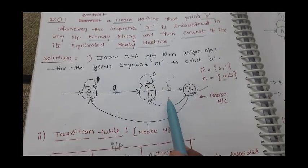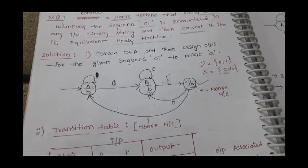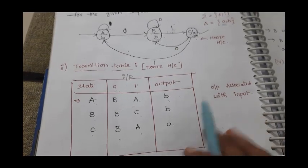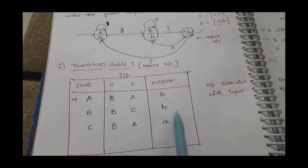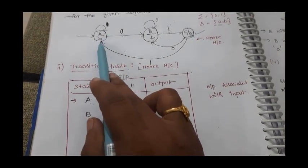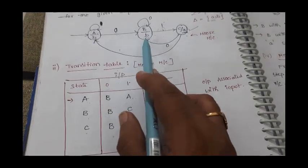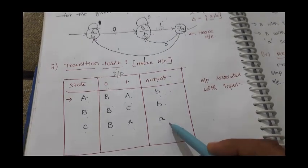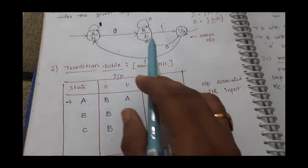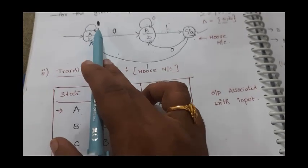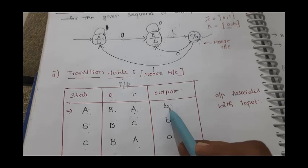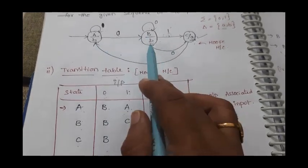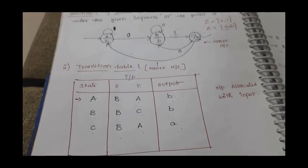From this Moore state diagram we will draw the transition table, which shows all states with their respective inputs and outputs. In a Moore machine, each state has only one output: state a has output 'b', state b has output 'b', state c has output 'a'. State a with input 0 goes to b with output b; with input 1 it stays in state a with output b. This is how to represent a Moore machine transition table.